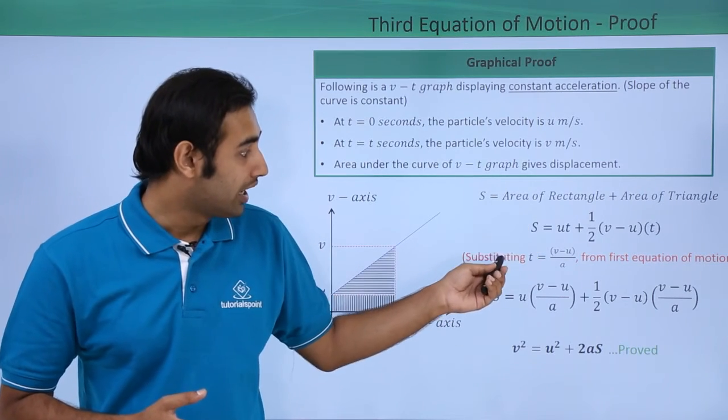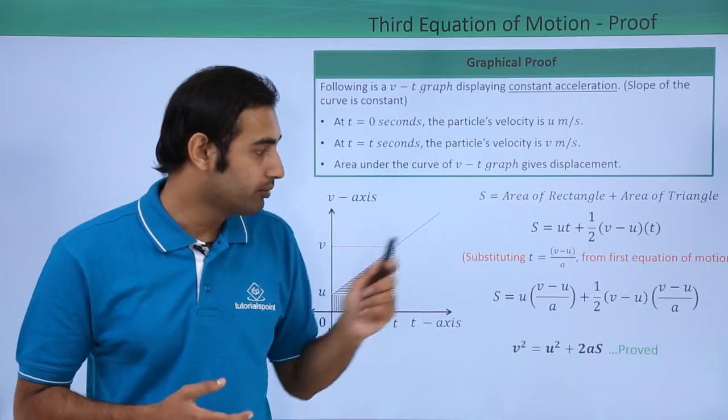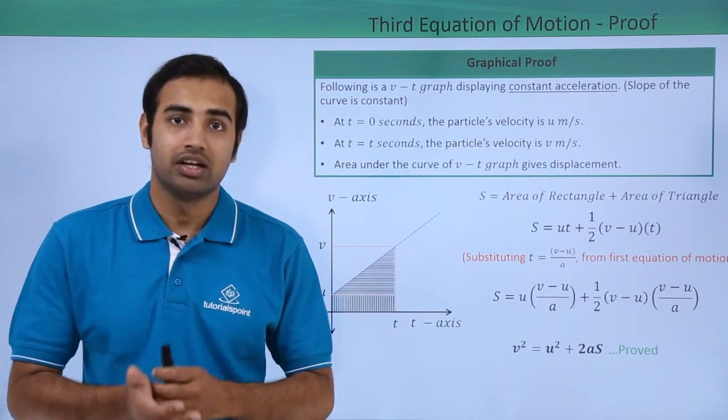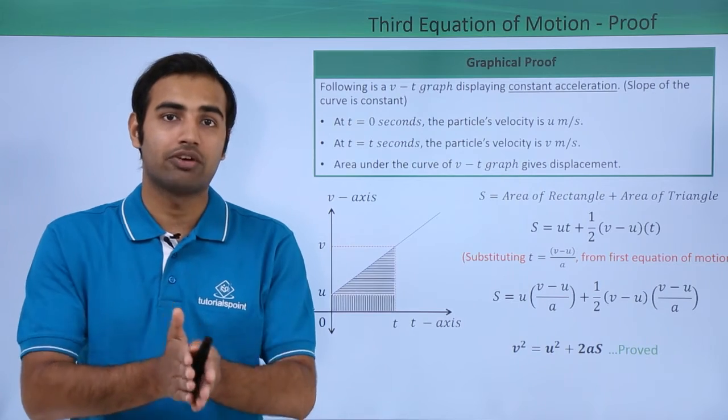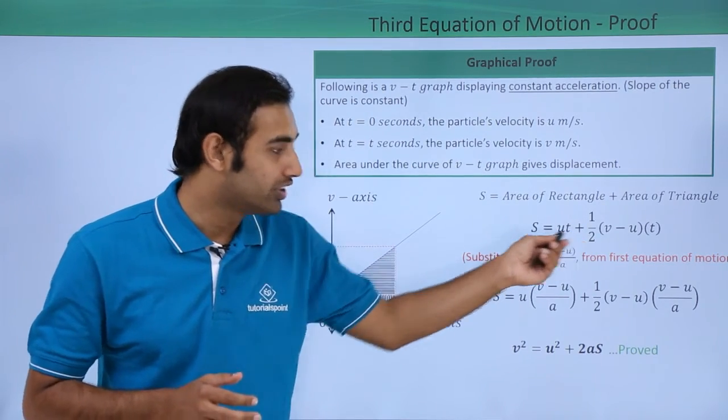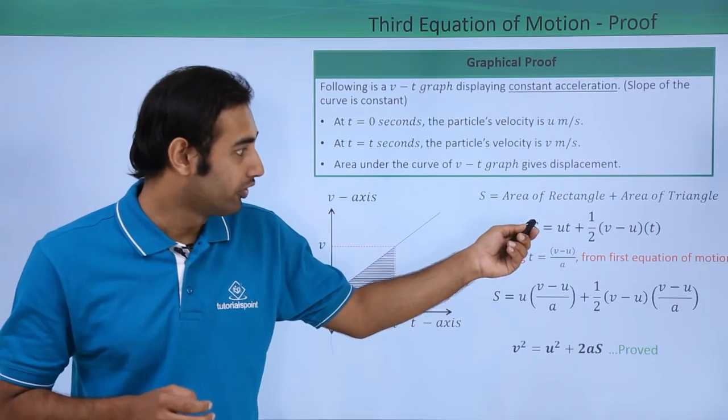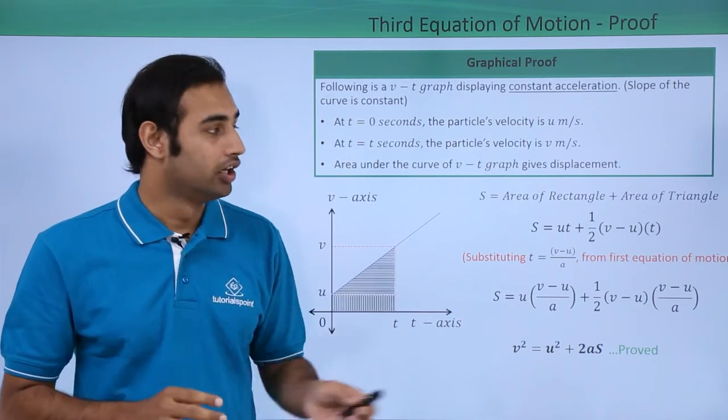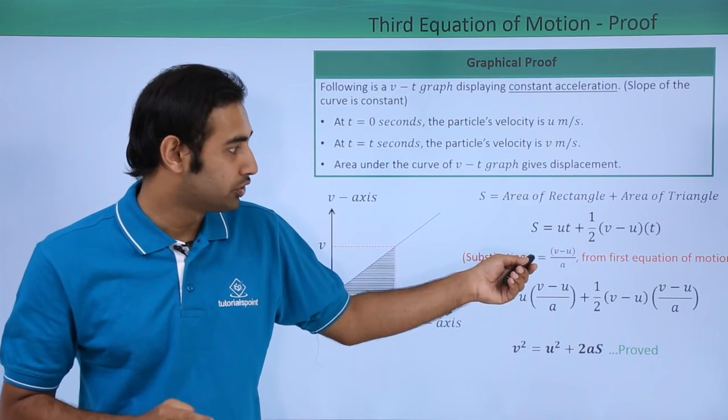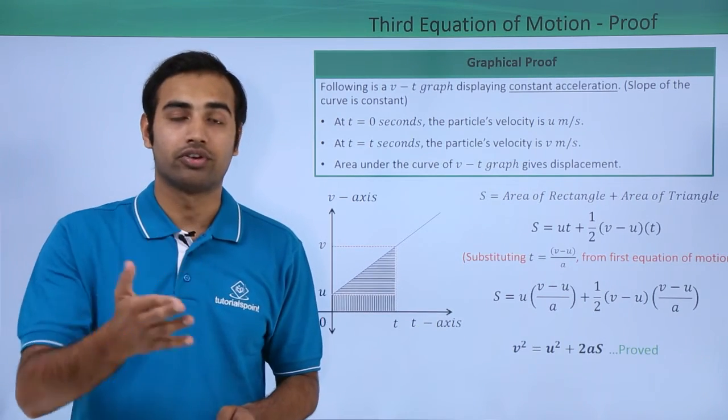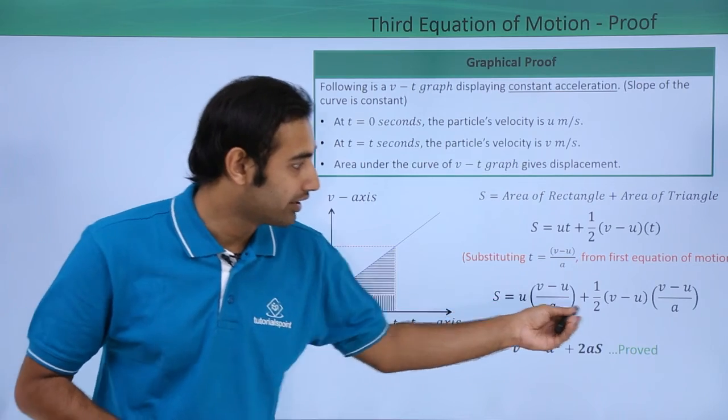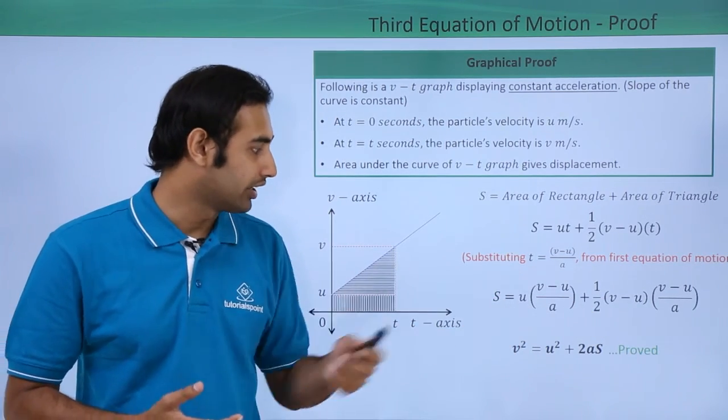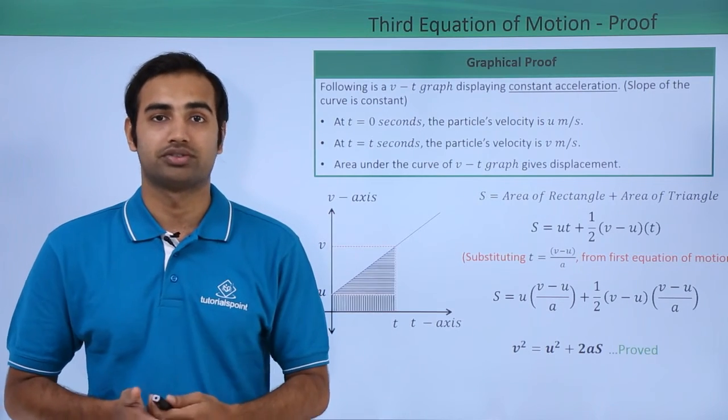Now once we have done that, I will substitute t = (v - u)/a from the first equation. Now why am I substituting this? Because in the third equation of motion, I have to eliminate time. So whatever factor of t I have in this equation of s, I have to remove the variable t. So I will be eliminating t by substituting (v - u)/a from the first equation. So once I have done that, I will get this specific expression which upon solving a bit more, I will get v² = u² + 2as.